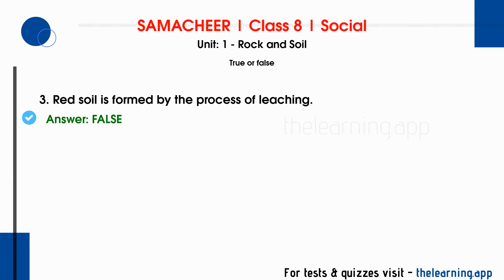Third question: Red soil is formed by the process of leaching. This is false. Red soil is formed by the weathering of metamorphic rocks and crystalline rocks. The soil has iron oxide which gives it the red color. It is formed by the process of weathering, not leaching.